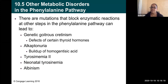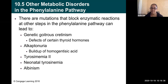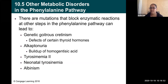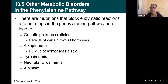There are mutations that block enzymatic reactions at other steps in the phenylalanine pathway too. Genetic goitrous cretinism is a defect of certain thyroid hormones; alkaptonuria is a buildup of homogentisic acid, one of the last steps in that pathway; there's also tyrosinemia 2, neonatal tyrosinemia, and albinism. These are all different disorders that can develop if something is wrong with that pathway — if just one enzyme doesn't get made along that big ten-step process. Your body does this every time you eat meat, turning phenylalanine into tyrosine and taking all ten steps.